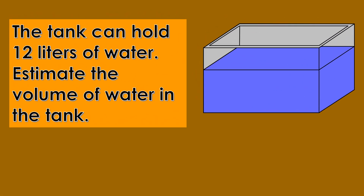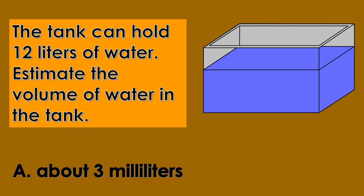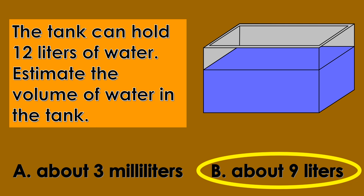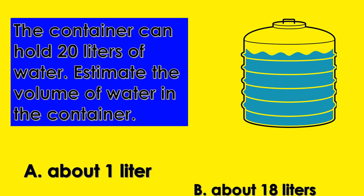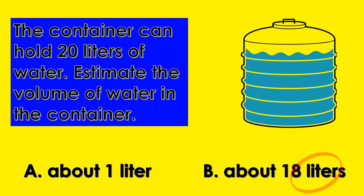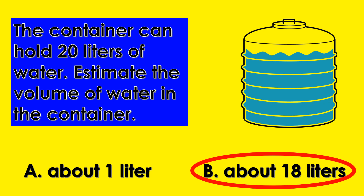The tank can hold 12 liters of water. Estimate the volume of water in the tank. A. About 3 milliliters. B. About 9 liters. Very good! It's about 9 liters. The container can hold 20 liters of water. Estimate the volume of water in the container. A. About 1 liter. B. About 18 liters. Good job! It's about 18 liters.